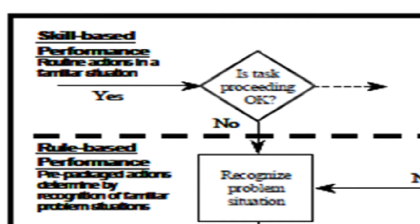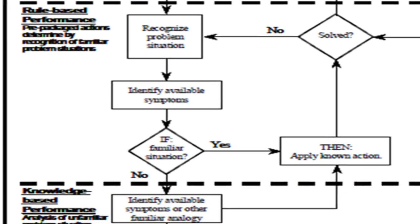Let's look at the GEMS chart. At the top, we see skill-based performance involving routine actions in a familiar situation. If the task is proceeding okay, we continue on to completion of the task. If the skill-based performance level is not proceeding okay, we drop into rule-based performance requirements. Pre-packaged actions are used when familiar problem situations are recognized. If we recognize the problem situation, we identify the symptoms, and if it is determined to be a known familiar situation, we can apply a predetermined action. If the problem is solved, we continue with the task. If the action is not solved, we go back through the problem-solving model. If it is then resolved using different rules, we go back and complete the task.